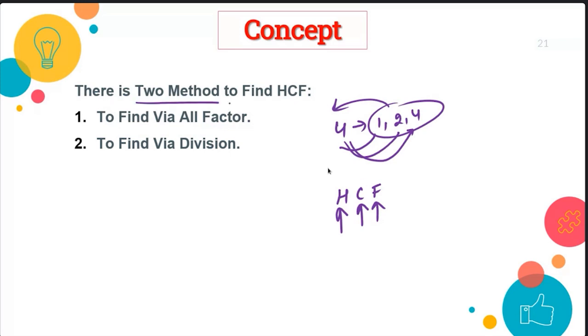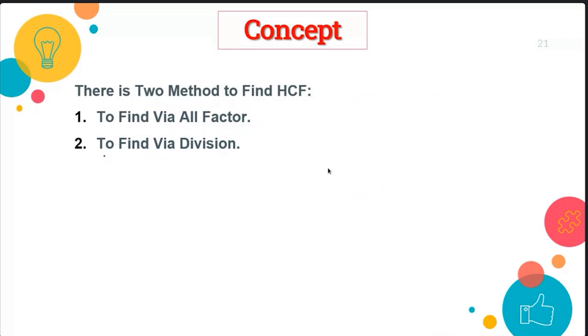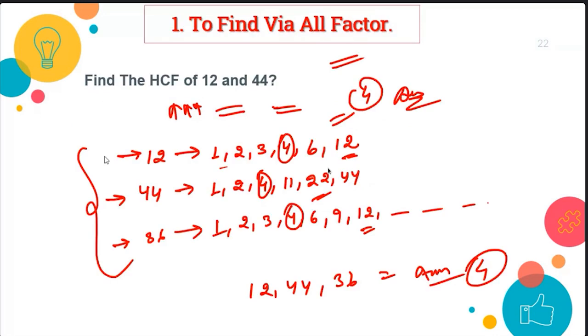There are two methods to find the HCF. The first method is by listing all factors — we calculate all the factors and then find the HCF. The second method is via division. Both methods are easy, and I'm going to discuss them one by one.